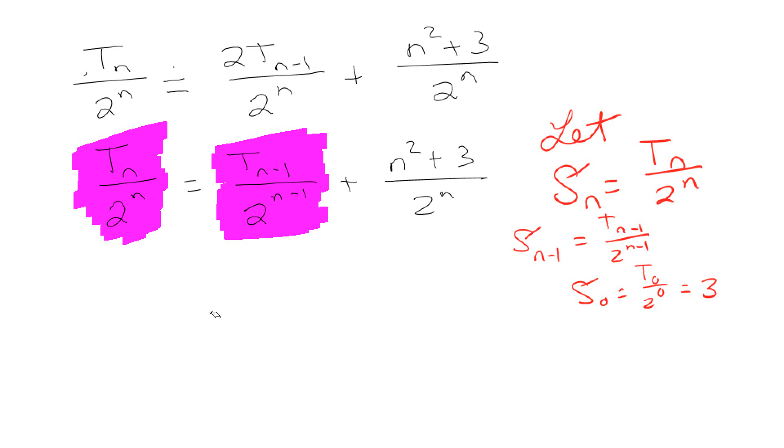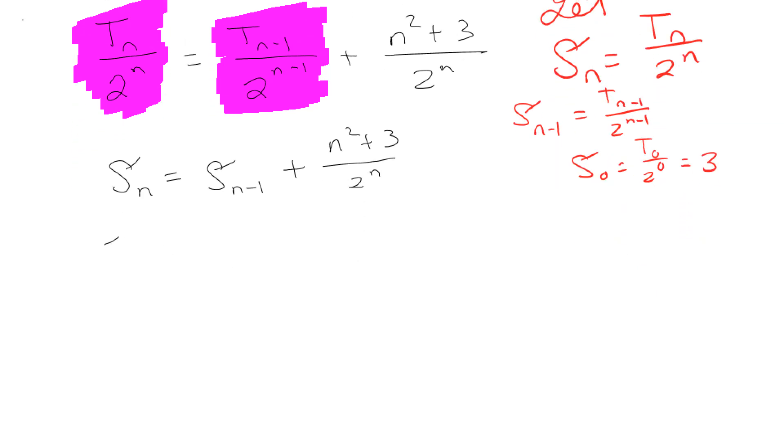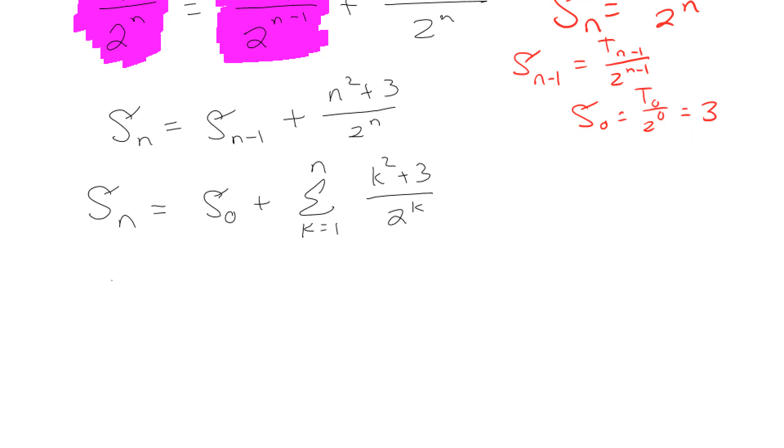All right, so that means I can rewrite this. S sub n is equal to S sub n minus 1 plus n squared plus 3 over 2^n. Awesome. So that means I can rewrite this as a summation now. Instead of writing as a recurrence, S sub n equals the sum from k=1 to n of k squared plus 3 over 2^k. Got it?